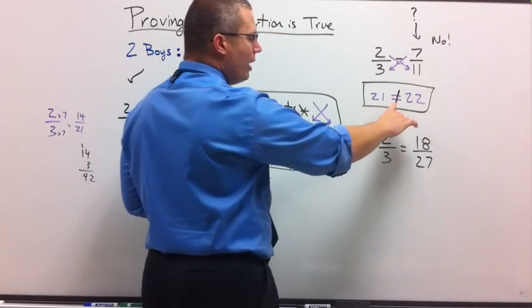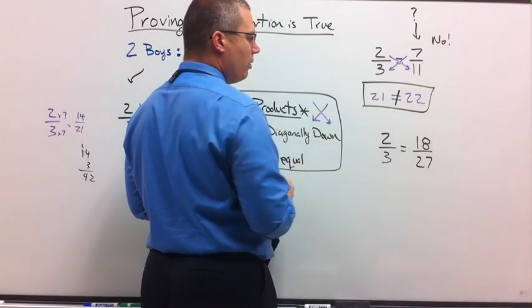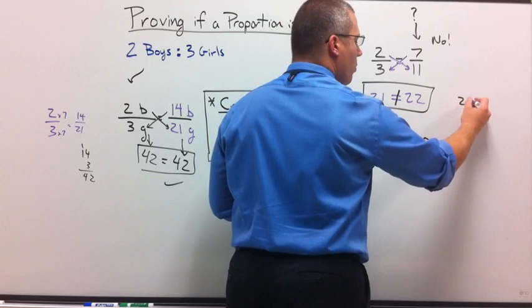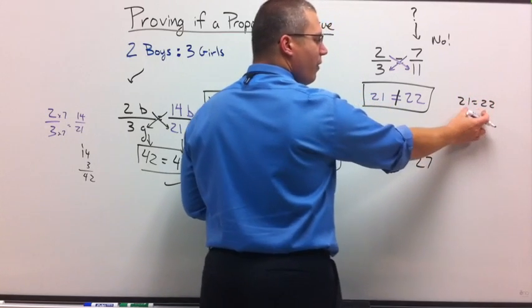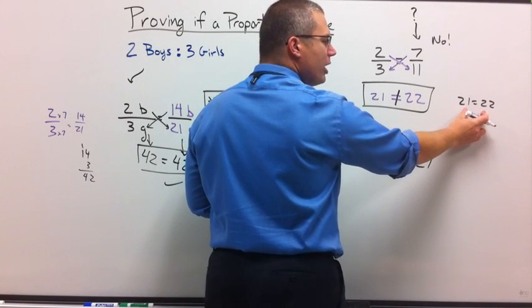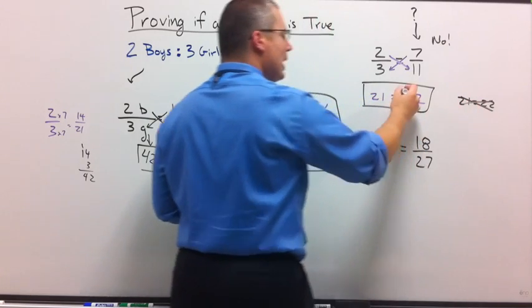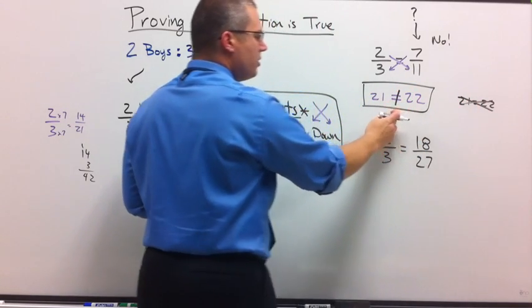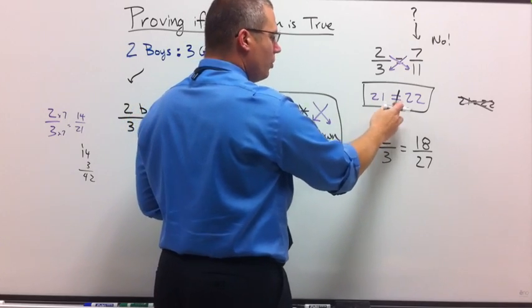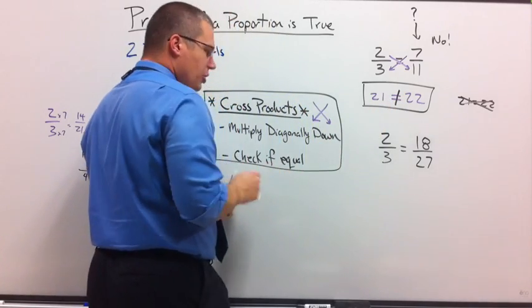So yes, we need to put a line through it if it is not equal. If you would have left it 21 equal 22, that's a false statement. I would look at you and say, really? Is 21 equal to 22? No. Put a line through the equal sign because this is a symbol you'll see throughout high school. Not equal.